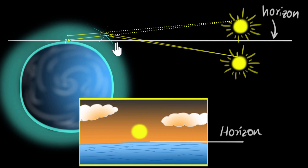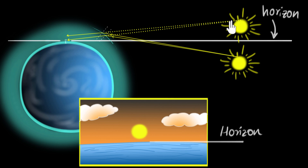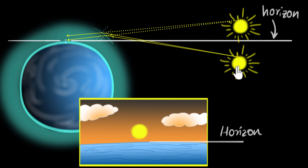So long story short: due to our atmosphere bending the rays of light downwards towards us, the sun appears higher in the sky. And this is not just for the sun — it will happen for any celestial body: the moon, the planets, or even the stars.